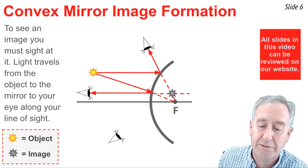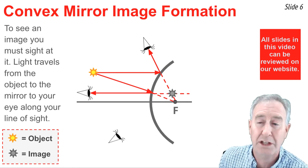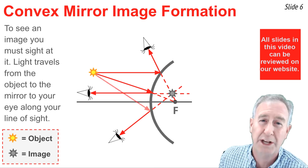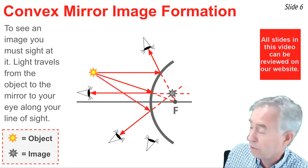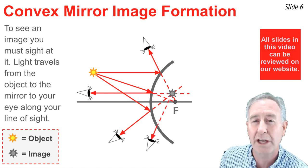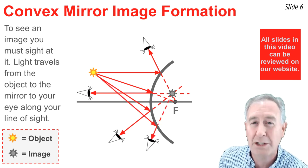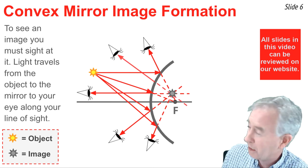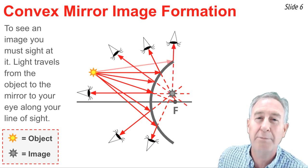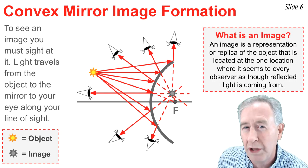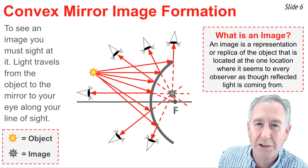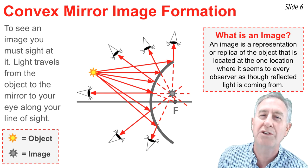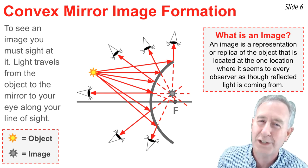We can imagine several other rays of light that would allow other eye positions to see the image. This eye position would have to sight along a line at the image location — when it does, a ray of light comes from object to mirror to the eye. And this eye position would do the same. We could do this for all sorts of eye positions, and what we conclude is that an image is that one location in space where we look to see a replica or representation of the object — the location where it seems to every observer as though the reflected light is coming from.